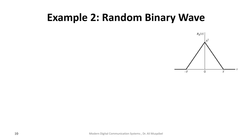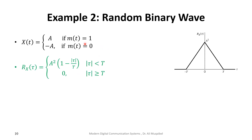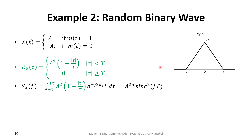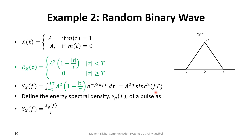Example 2: the random binary wave, which we have also addressed previously. This wave takes values +A or −A over a given period. Its autocorrelation is a triangular function. The question is to find the PSD. Using the Fourier transform and recalling that the Fourier transform of a triangle function is sinc², we get that the PSD is proportional to sinc². Energy and power are related through time, since power is the rate of energy use.